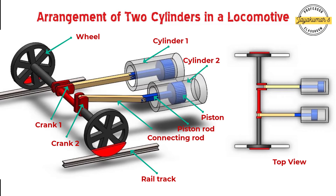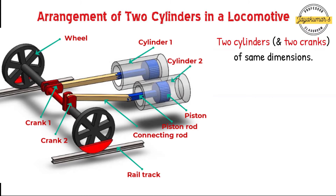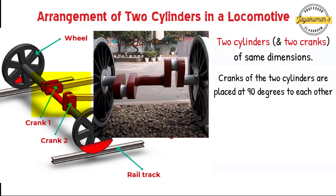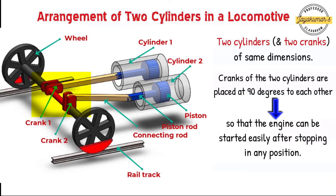As you can see, the cranks of the two cylinders are placed at right angles to each other. This is the top view of the two-cylinder locomotive. Locomotives have two cylinders and two cranks of the same dimensions. The reason the cranks are placed at 90 degrees to each other is to obtain a power stroke at uniform intervals, ensuring uniformity in the turning moment diagram. In other words, having two cranks at 90 degrees helps the engine to start easily after stopping in any position.